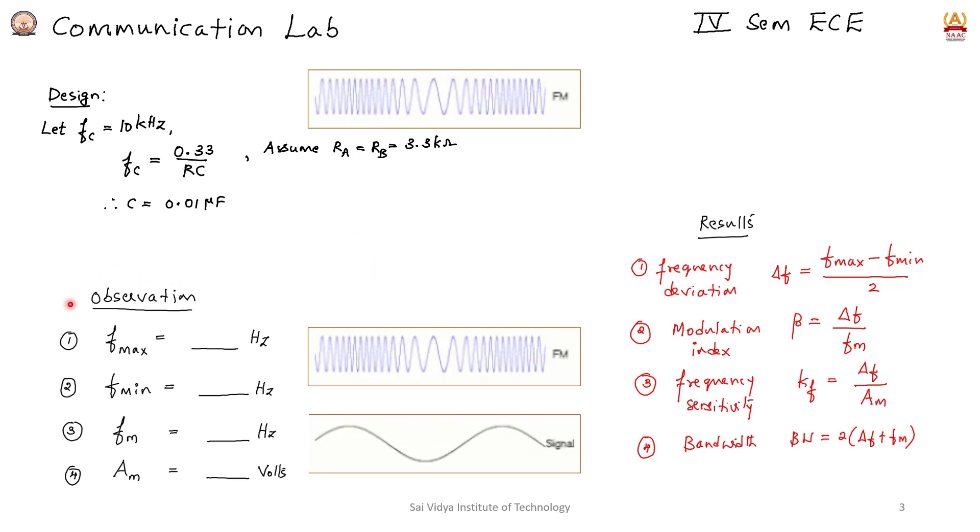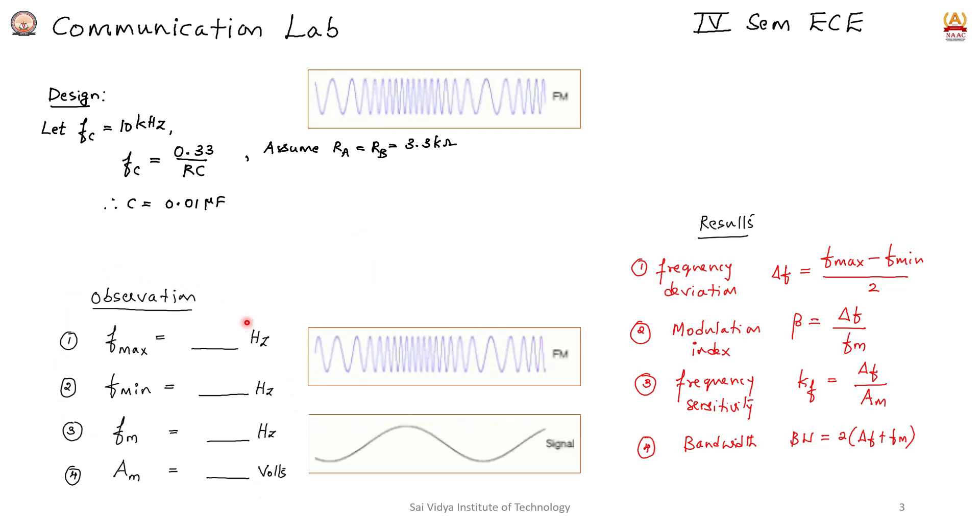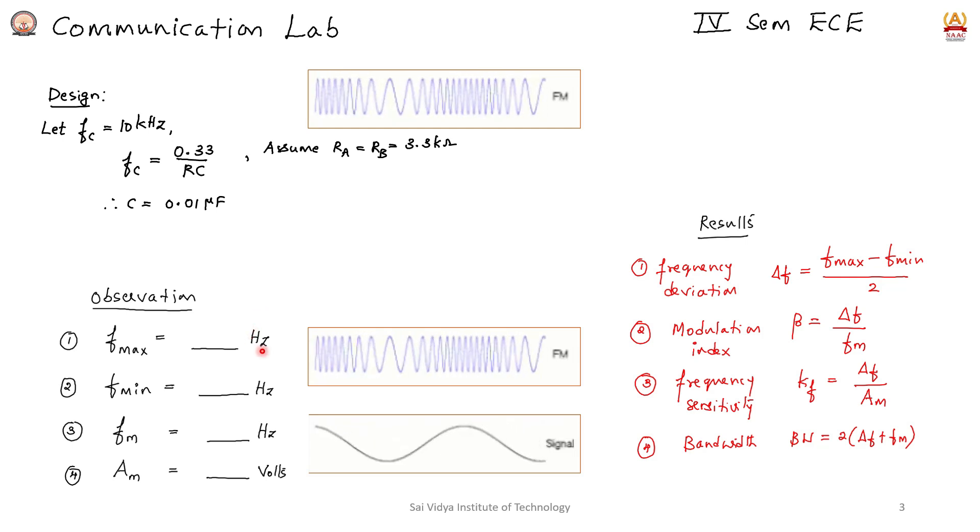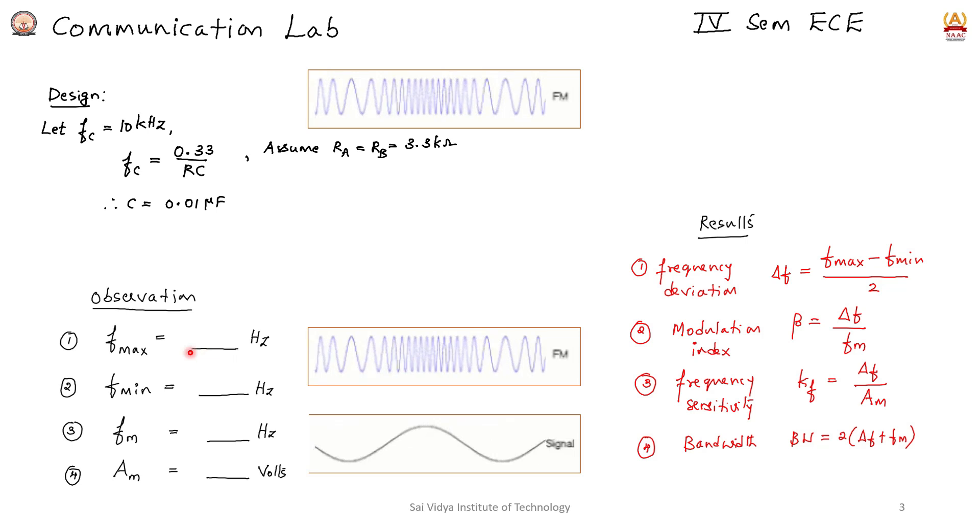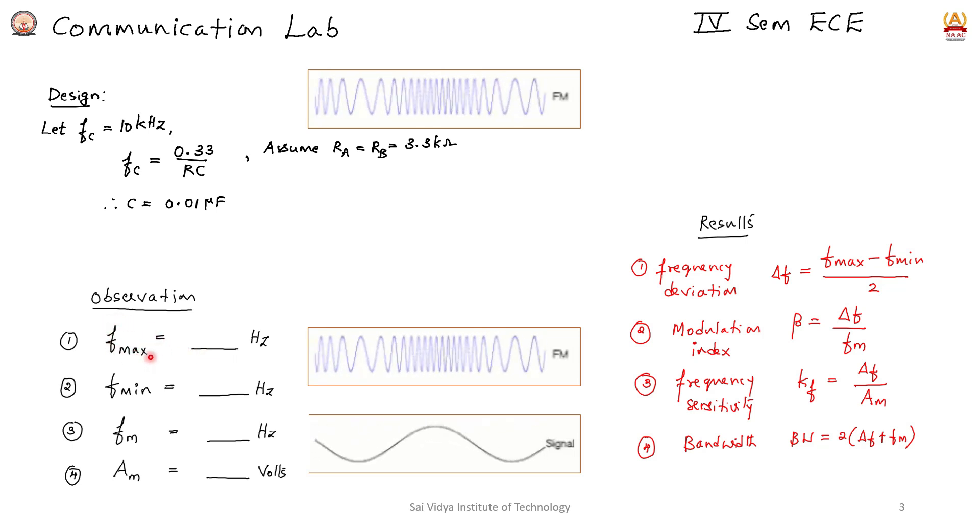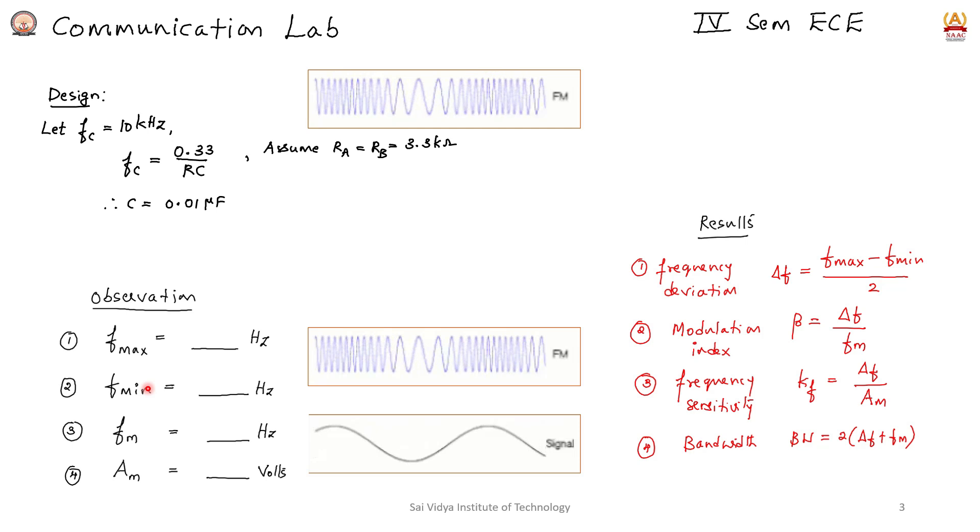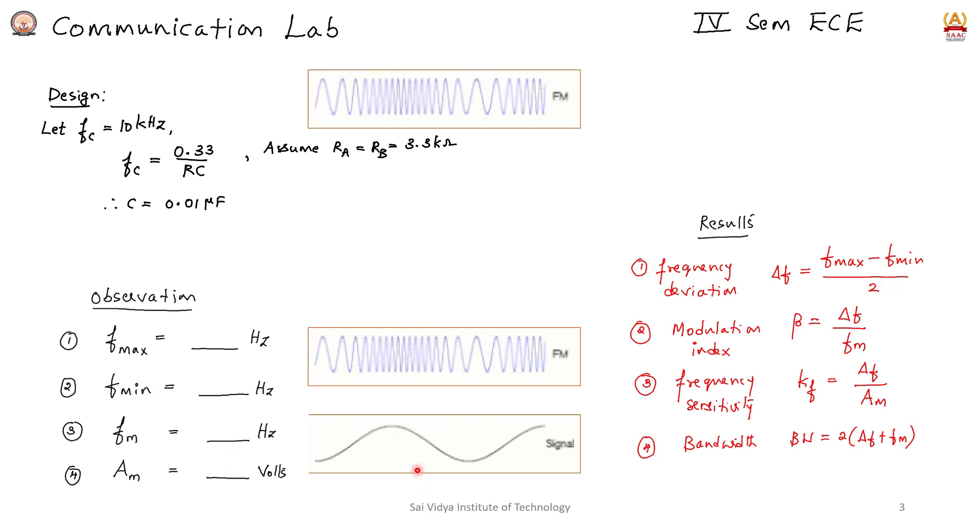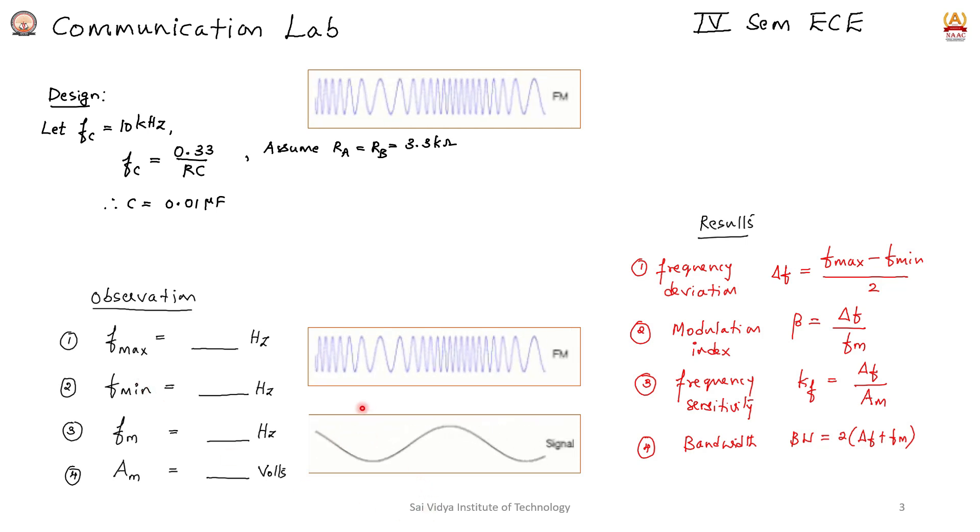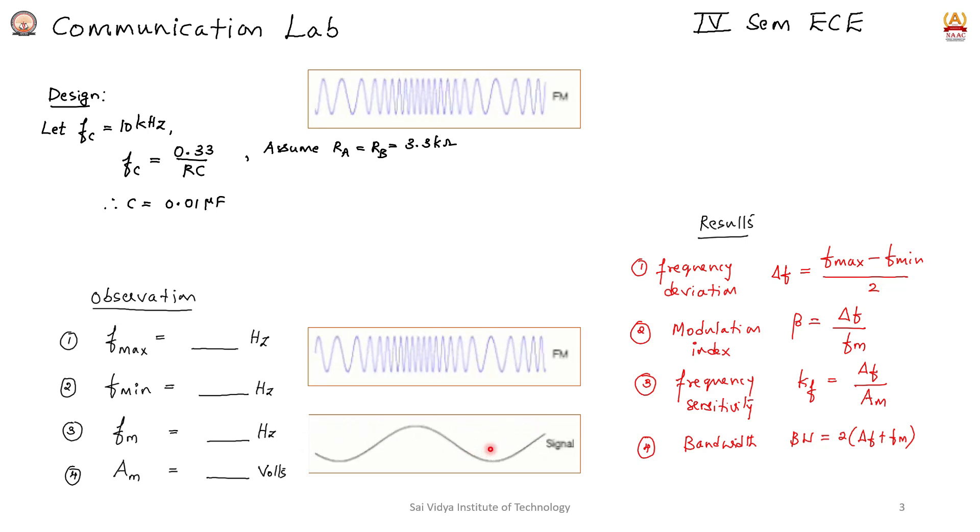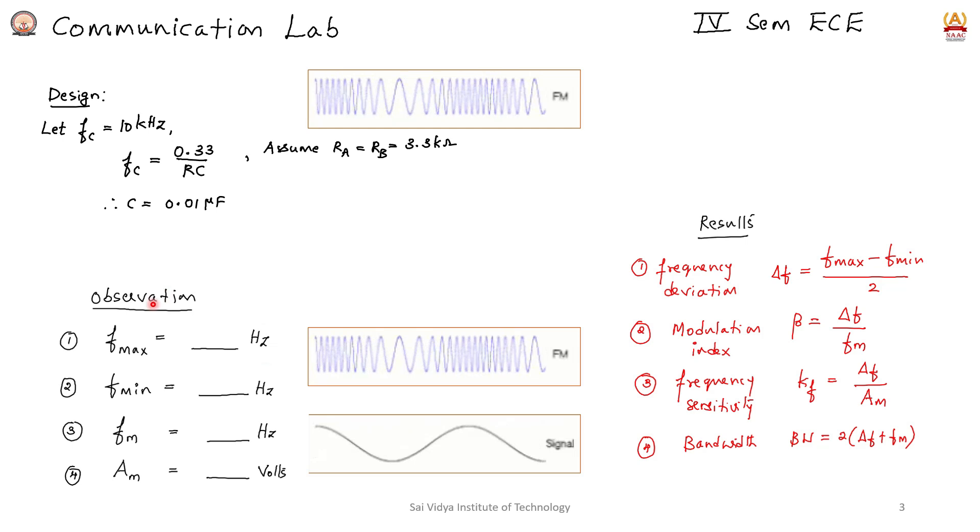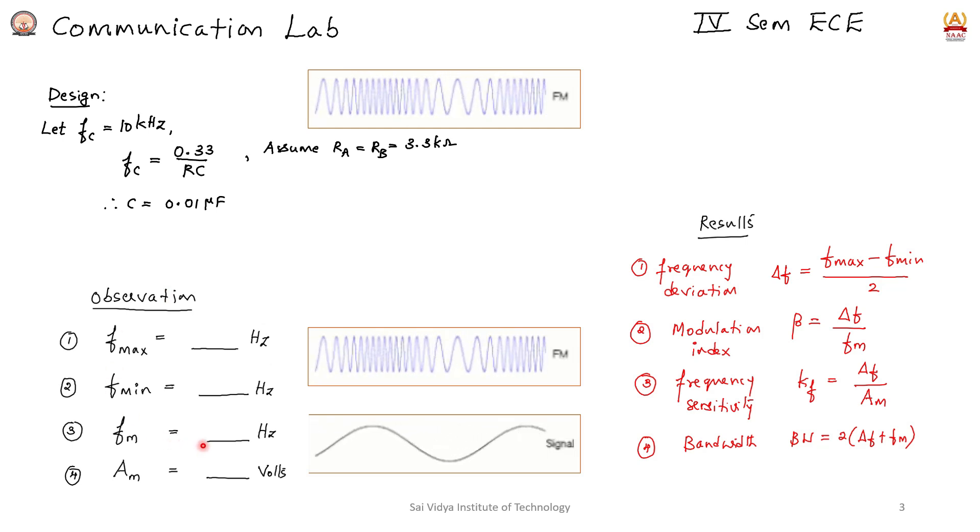In this experiment, we observe the maximum frequency and minimum frequency on the FM waveform. We also observe the amplitude and frequency of the message signal. All these observations should be noted carefully.